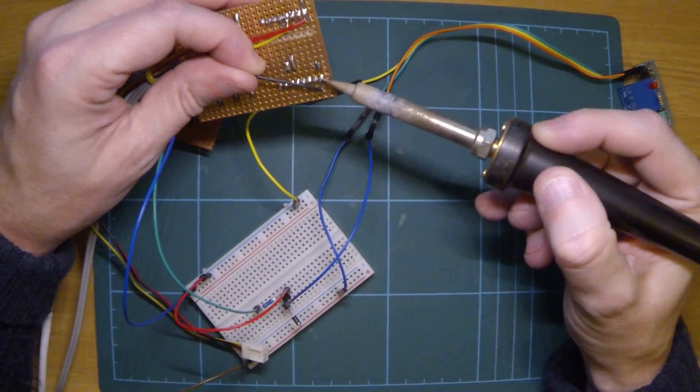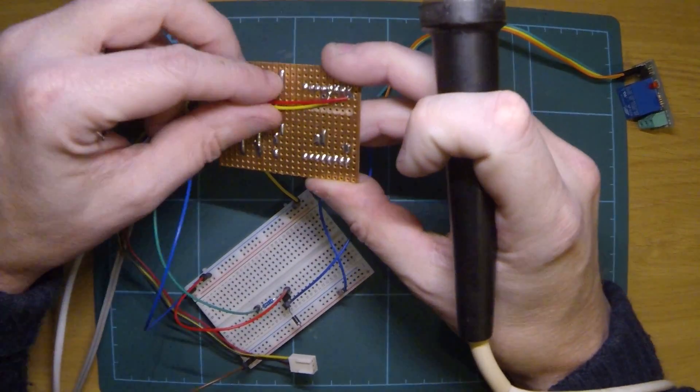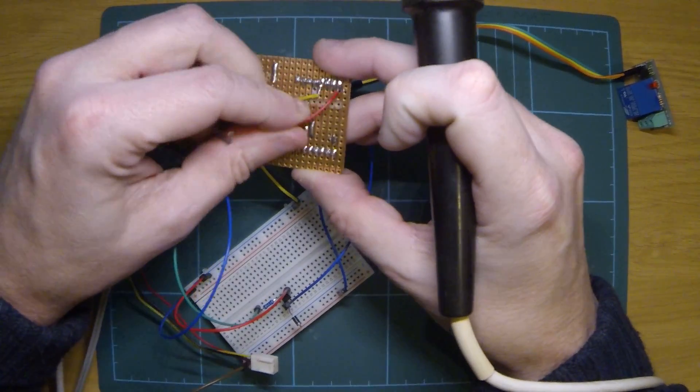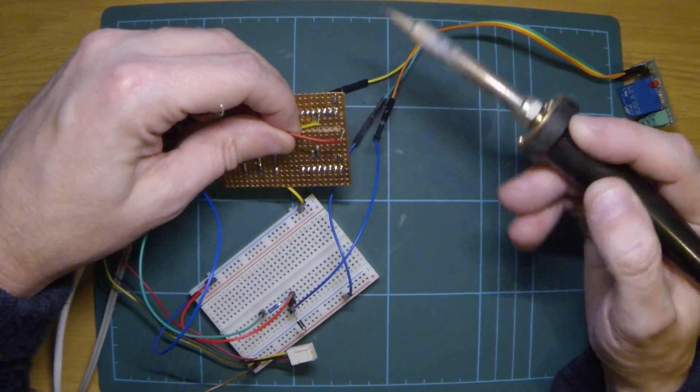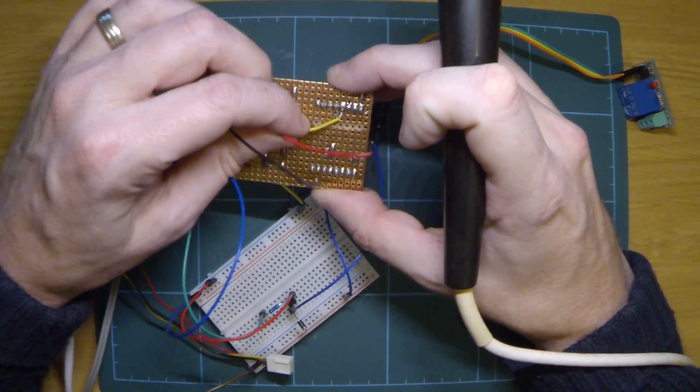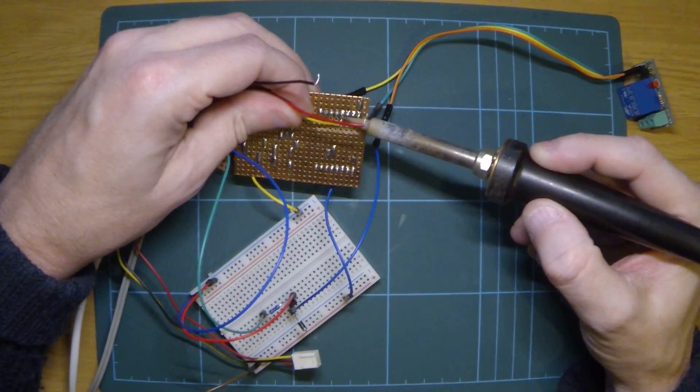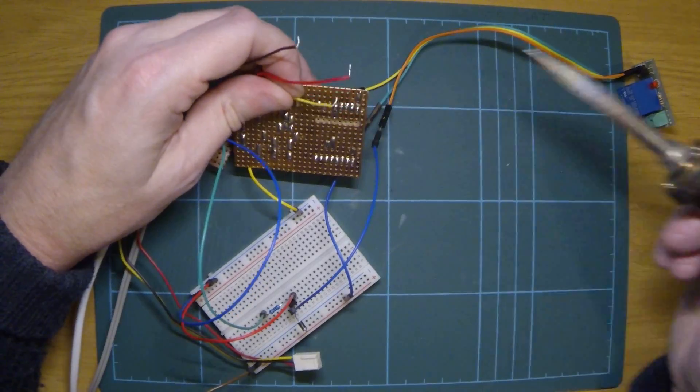I'll start by unsoldering these wires and getting rid of this little connector, which is for the relay. I'm not going to be putting it on like this anymore because I need to go through some extra circuitry: the transistor, the diode, and the resistor.